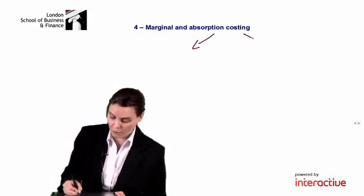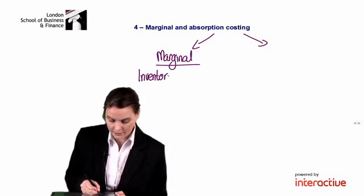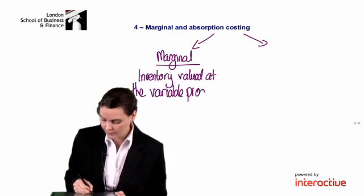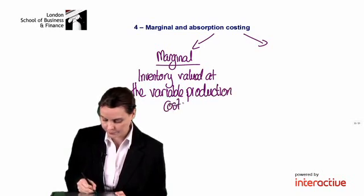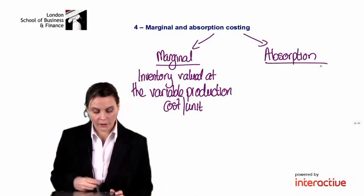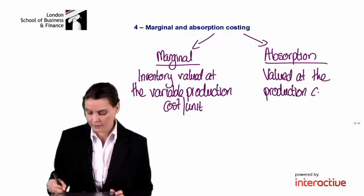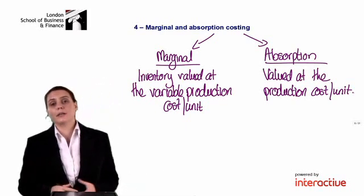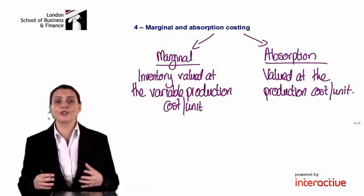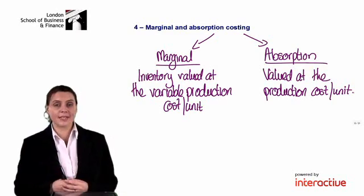The key difference that creates these profit differences is that in the marginal costing system, our inventory is valued at the variable production cost per unit, whereas in an absorption costing system, our inventory is valued at the full production cost per unit. Because we place a different value on our opening and closing inventory in each of the two costing systems, if we have inventory movements — meaning if our closing inventory is different to our opening inventory units — there will be differences in our profit figures.